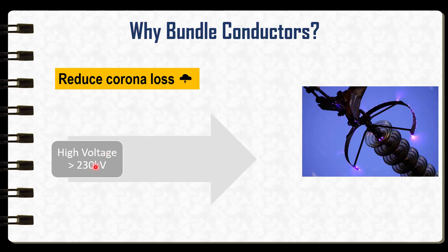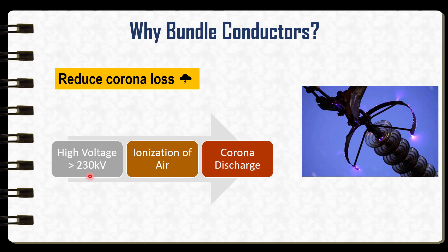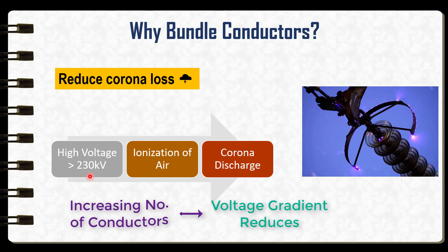At very high voltages, above 200 kilovolts, the electric field around a single conductor is intense causing the ionization of surrounding air, leading to corona discharge. So by increasing the number of conductors per phase, the voltage gradient around the entire bundle is reduced, which decreases corona formation and power loss.